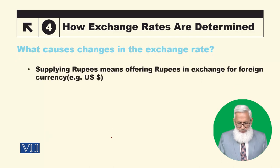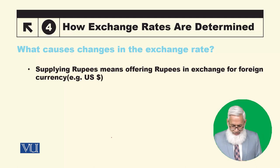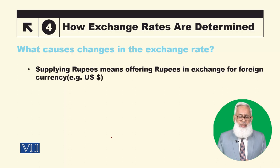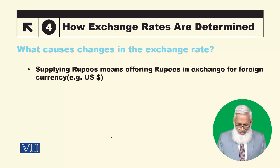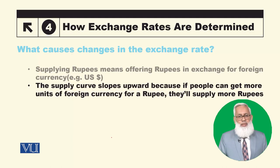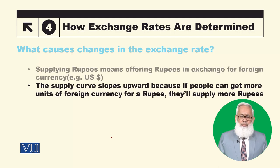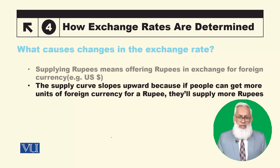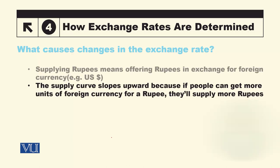Supplying rupees means offering rupees in exchange for foreign currency. The supply curve slopes upward because if people can get more units of foreign currency for a rupee, they will supply more rupees — just as a producer sells more quantity when the price is higher. So the supply curve is positively sloped.